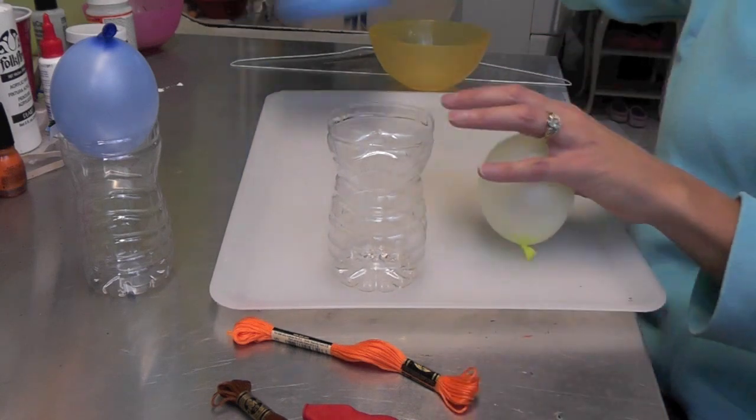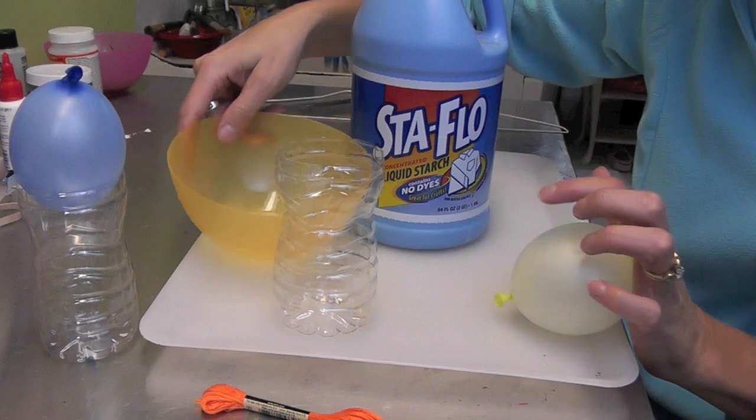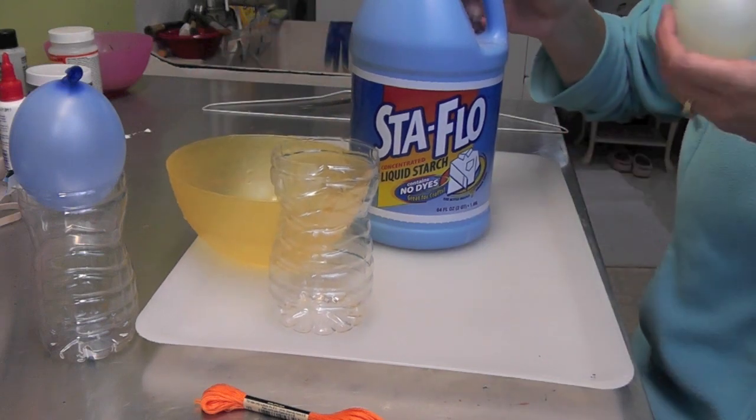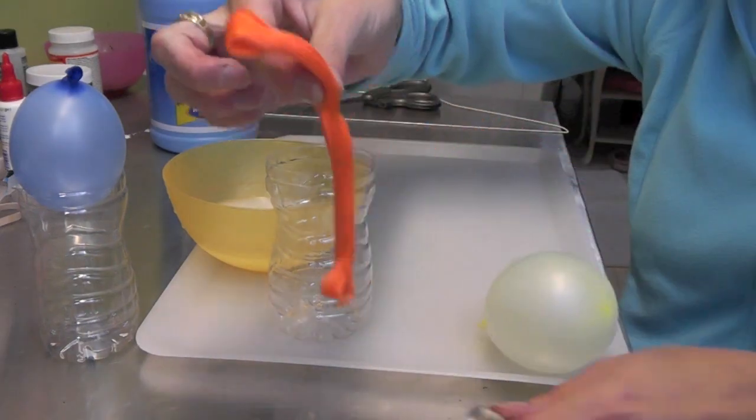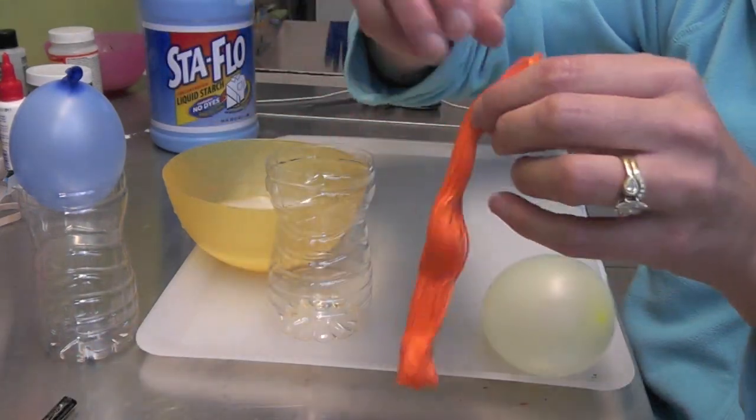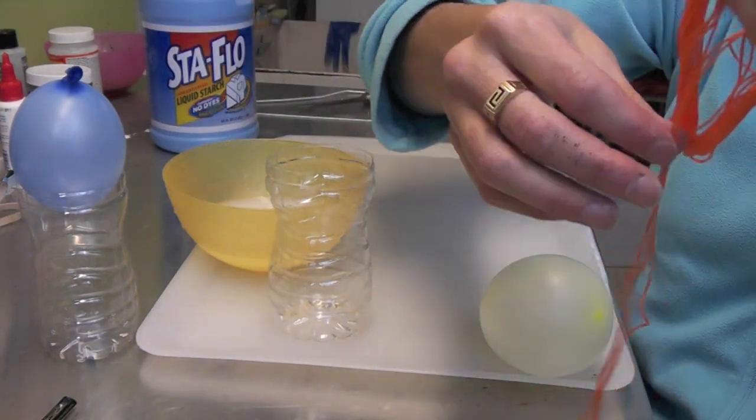The other thing that you'll need is liquid starch, and I'm just going to put it in a bowl straight. I'm not watering it down or anything. For each of the pumpkins, you're going to use one full thing of embroidery floss. And I learned this the hard way.